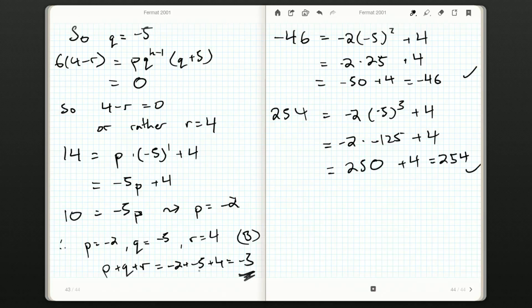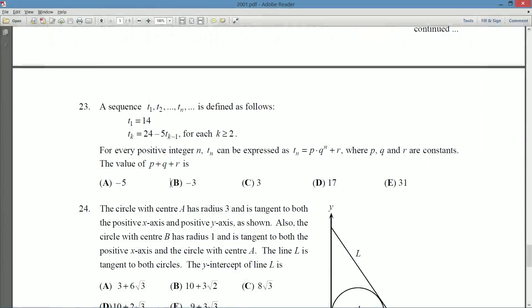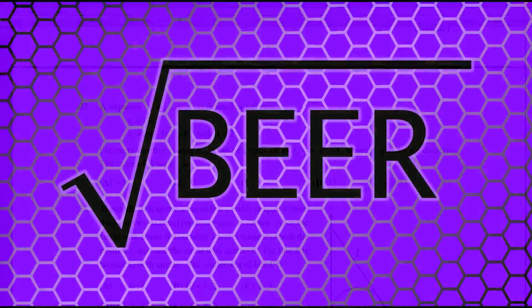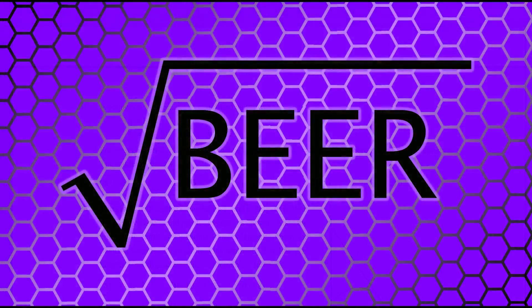So, we get their sum. Negative 2 plus negative 5 plus 4, negative 3. So, our answer is b. It's a nice little question. And we're halfway through part C. So, join me in the next video for question number 24. As we continue on through the 2001 Fermat Paper.